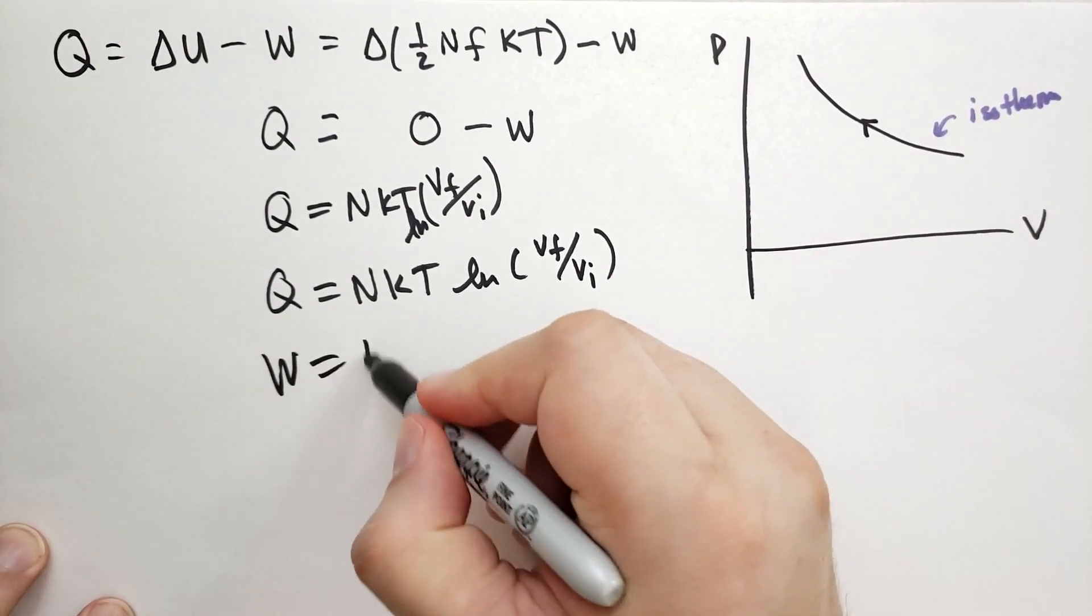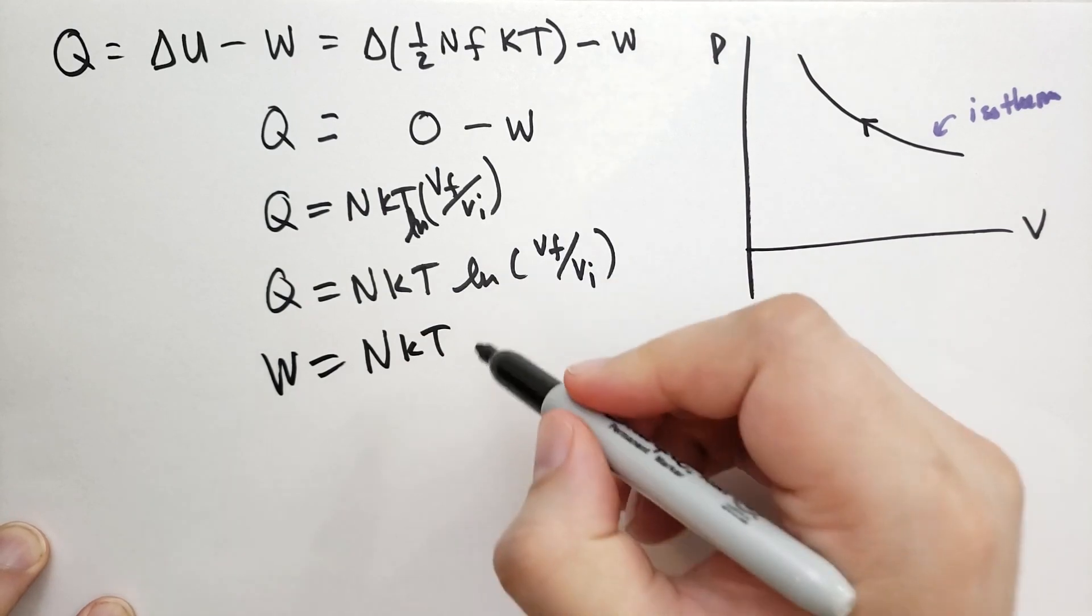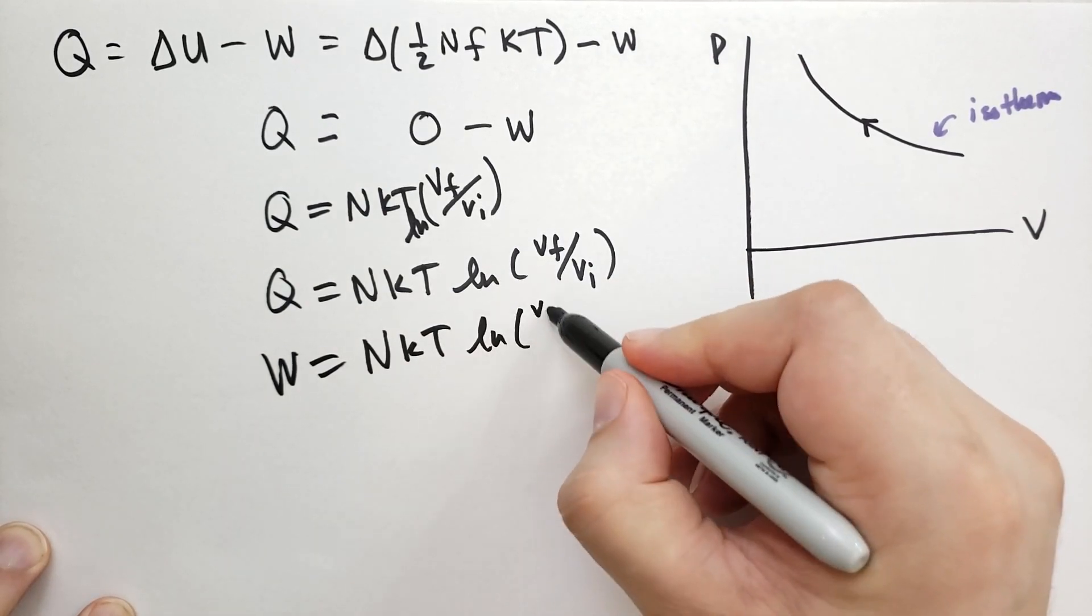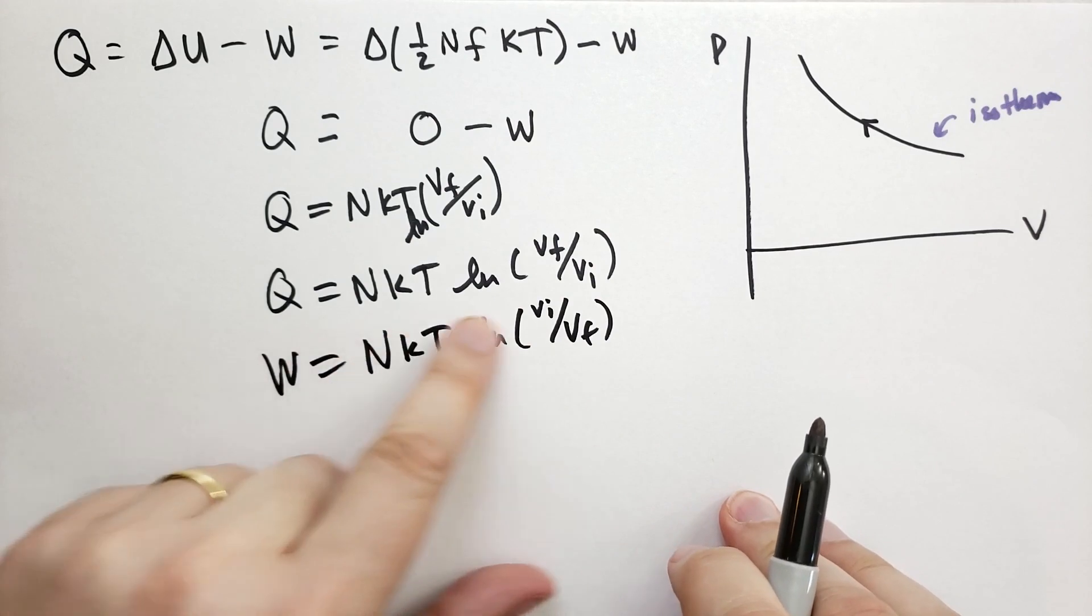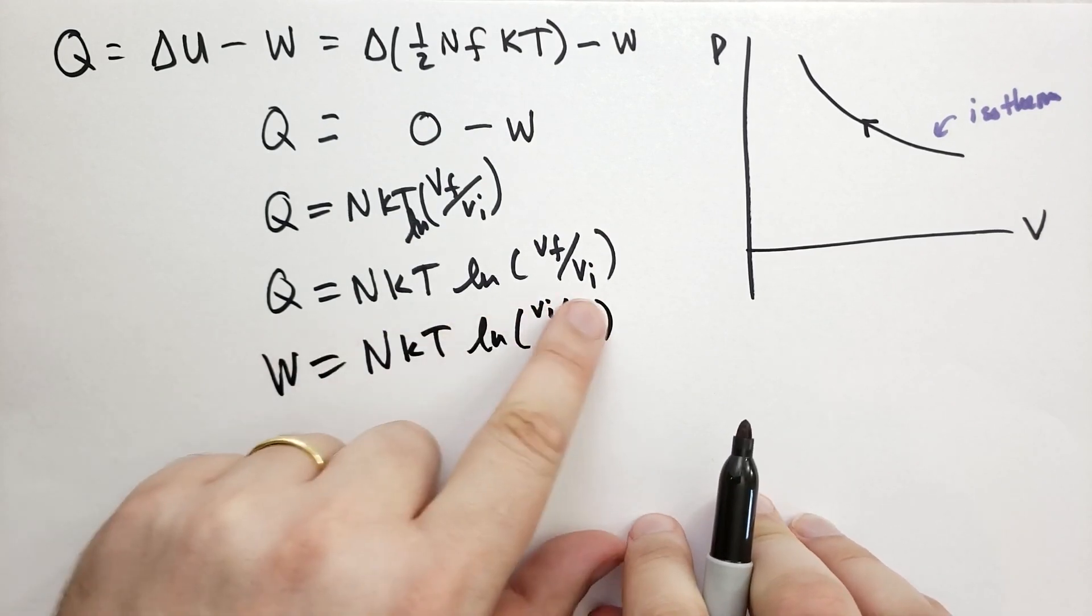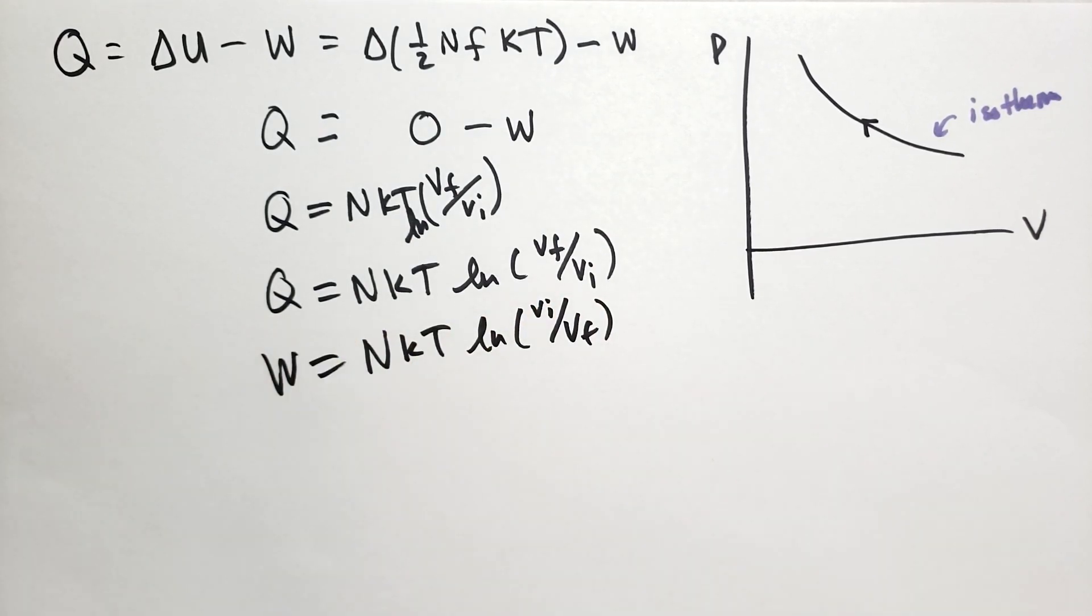So to summarize, the work done on the system is NKT log of the initial volume divided by the final volume. And the heat entering the system is the opposite of that. These exactly balance each other out because the internal energy doesn't change.